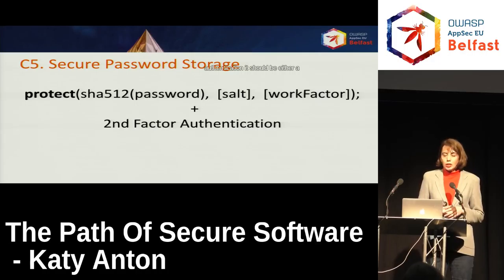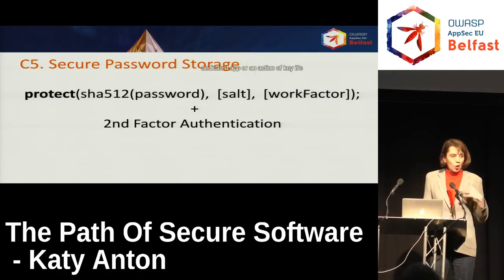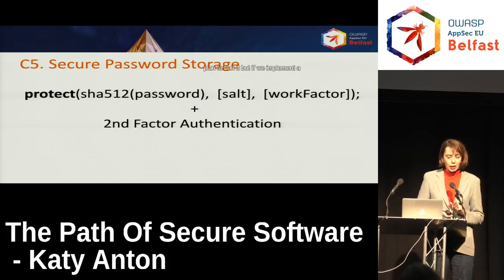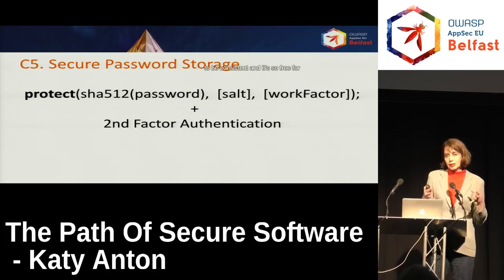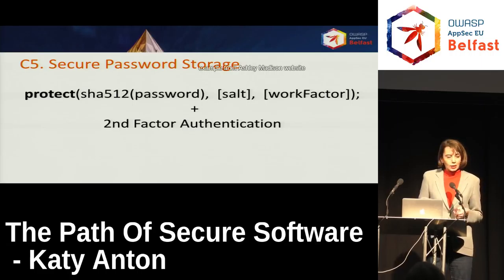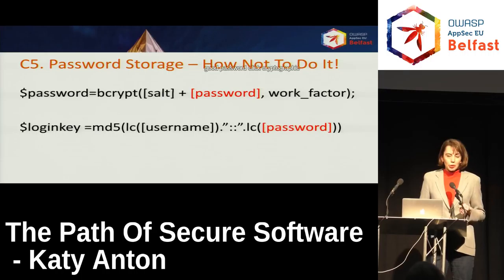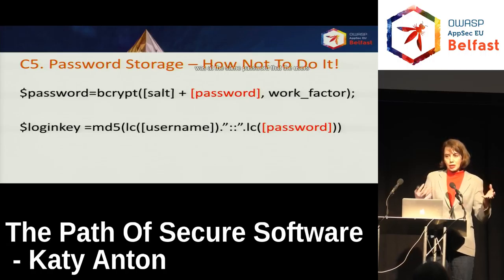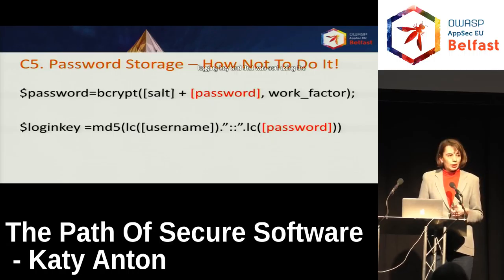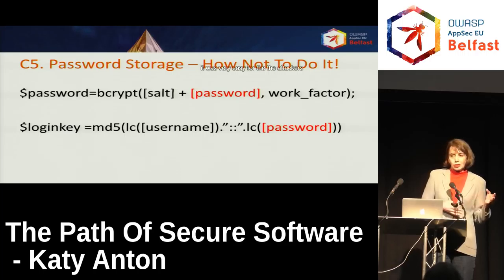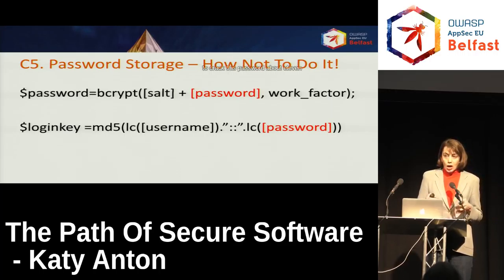When it comes to second-factor authentication, it should be either a dedicated app or an actual key. The latest NIST guidelines do not recommend SMS as a second factor, and they plan to ban it. If we implement secure password storage, it's important to be consistent throughout the entire software. Ashley Madison actually used a pretty good algorithm, bcrypt, but the same password was also used to create a fast login key stored using the deprecated MD5. Once this was understood, it was very easy to crack those passwords — about 11 million passwords were disclosed due to this flaw.